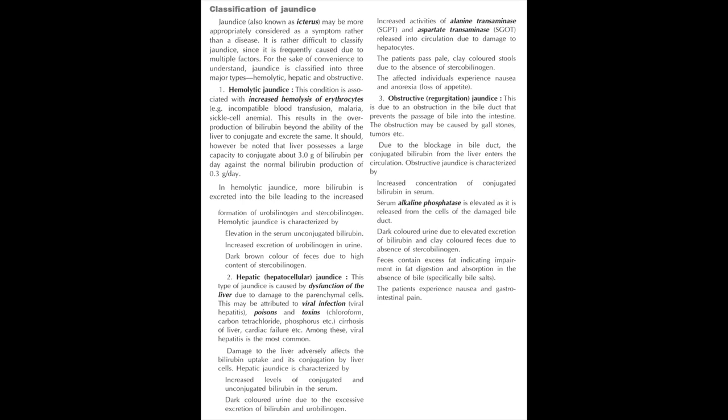In hepatic jaundice, there are increased levels of both conjugated and unconjugated bilirubin in serum, dark colored urine due to excessive excretion of bilirubin and urobilinogen, and increased activities of alanine transaminase and aspartate transaminase released into circulation due to damage to hepatocytes. The patient also passes clay-colored stools due to absence of stercobilinogen.